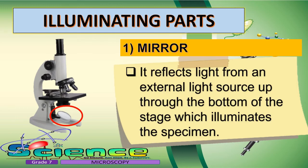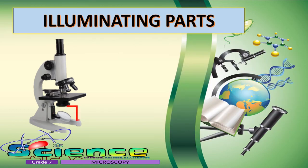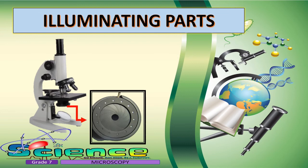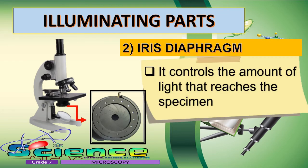The light source can be natural light from the sun or artificial light from a lamp. In other microscopes, an illuminator is used in place of a mirror. The second illuminating part is the iris diaphragm. It is located under the stage and controls the amount of light that reaches the specimen, providing enough light for viewing.